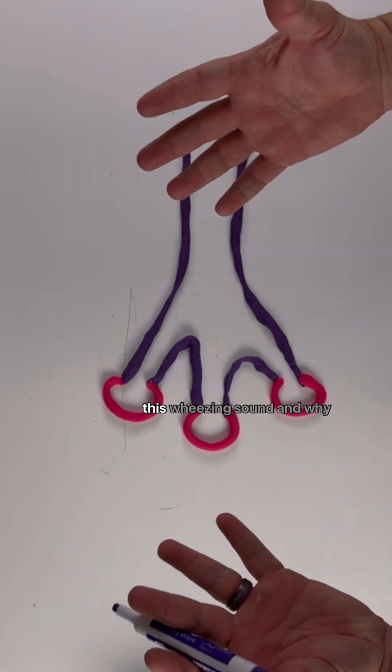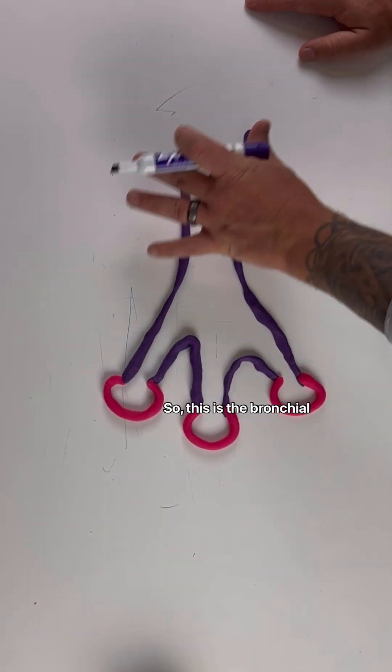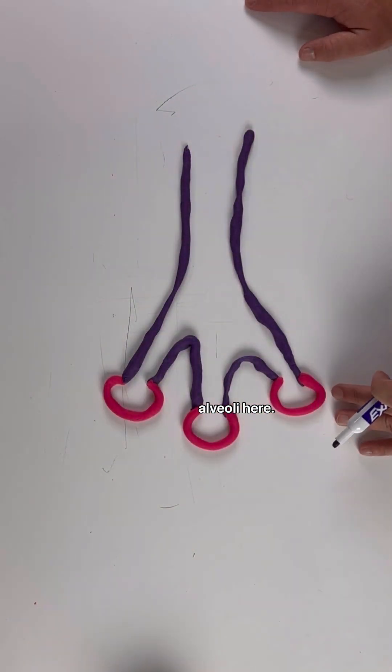Let's talk about this wheezing sound and why it's so distinct. This is the bronchial tree and these are the alveoli here.